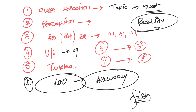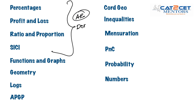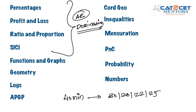Let's talk about the chapters. These are the chapters I will tell you — don't be afraid. First: Percentages. Profit and Loss. Ratio and Proportion. SICI. This whole arithmetic constitutes the major section and arithmetic has always been dominating. You cannot remove arithmetic. 50% of your time — about 40 minutes in your paper — should be dedicated to this. We are following the same format.